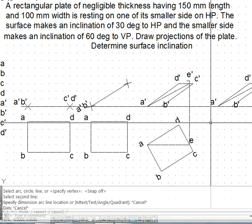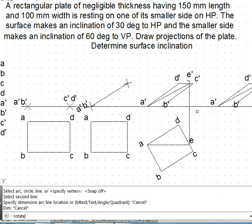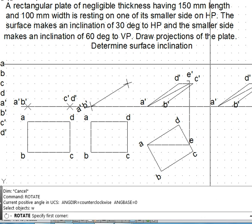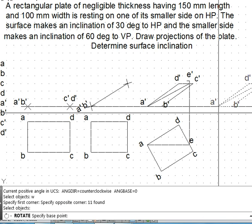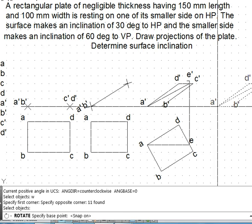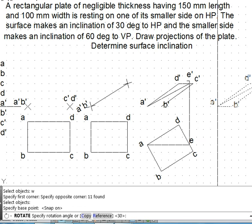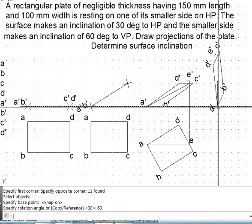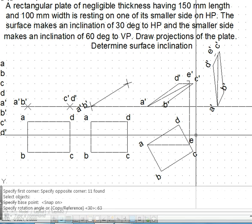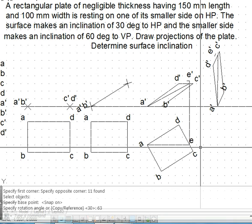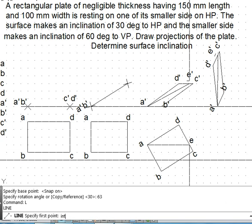I'll rotate this whole thing about the base point by angle 63. Now A'E' becomes vertical. When it becomes vertical, now I get the vertical dropping points.